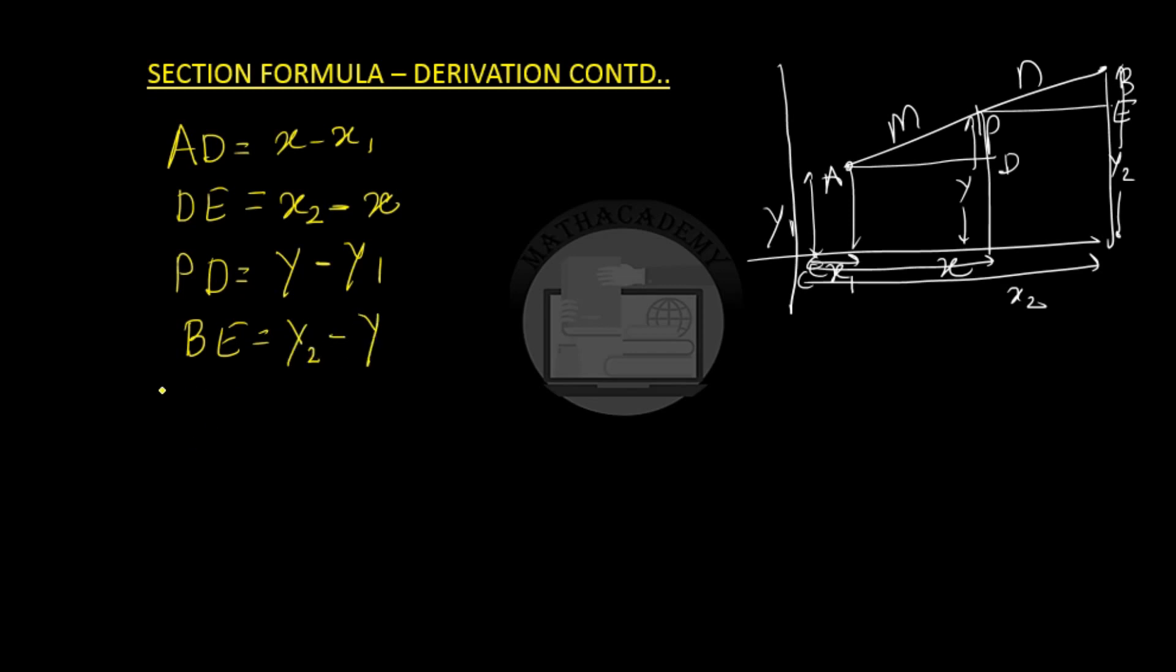The ratio which we have got is AP over PB is equal to PD over BE is equal to AD over DE. Let us substitute the values: AP is m and PB is n. So, m over n is equal to y minus y1 over y2 minus y, which is equal to x minus x1 over x2 minus x.